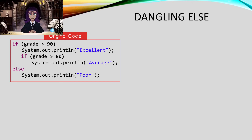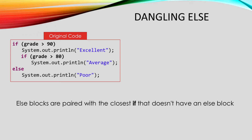This is called the dangling else problem. The rule that the computer uses is that it will pair the else with the closest if that doesn't have an else block. That means that the else will be paired with the second if, and the compiler sees the code like this.